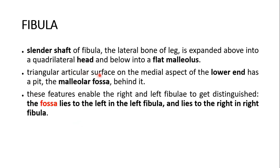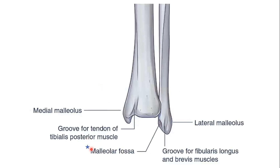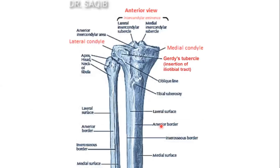The triangular articular surface on the medial aspect of the lower end has a pit — the malleolar fossa — behind it. Let's see the malleolar fossa. You can see this is the malleolar fossa. This is the fibula, this is the lateral malleolus, and here is the malleolar fossa of the fibula.